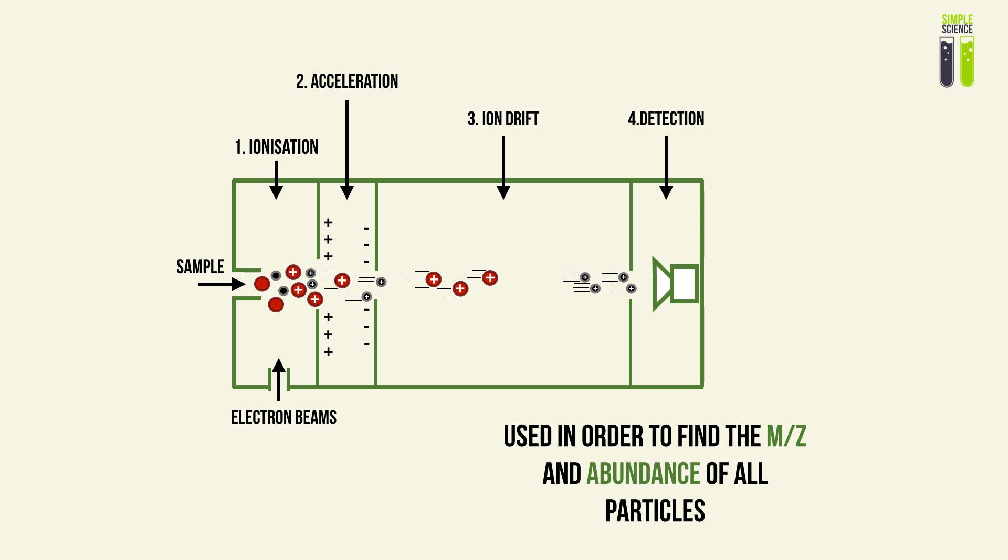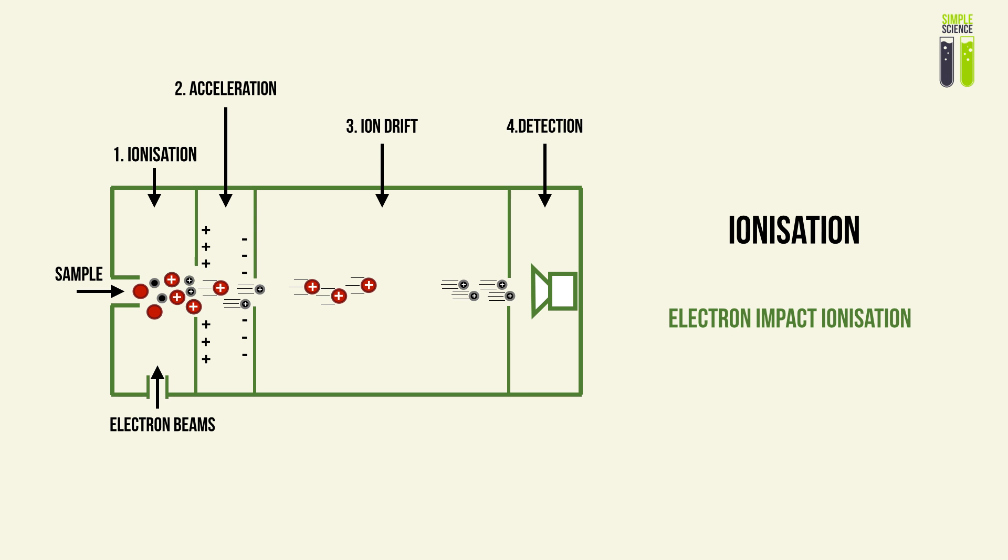I've conveniently numbered out the stages of mass spectrometry for you so it's easier to understand. When you finish watching this video, you'll understand how mass-to-charge ratio is found and how the abundance is found. That's pretty much it on mass spectrometry.